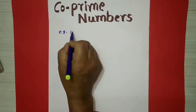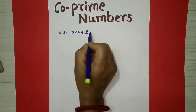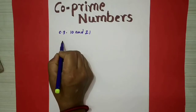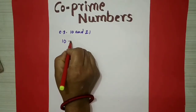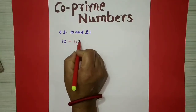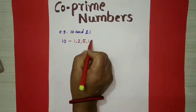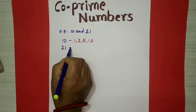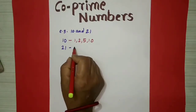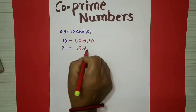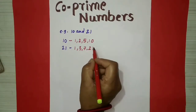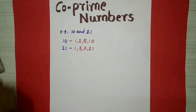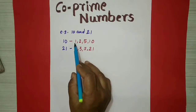10 and 21 are co-prime numbers because the divisors of 10 are 1, 2, 5, and 10, while the divisors of 21 are 1, 3, 7, and 21. And the only factor common to both 10 and 21 — just see here, the divisors are listed.